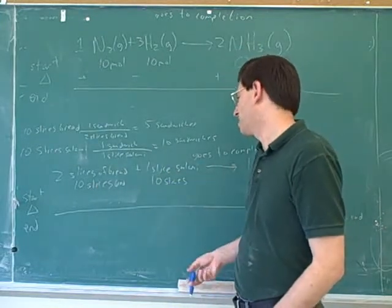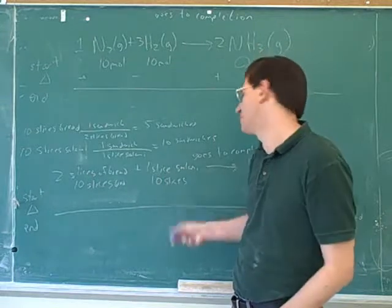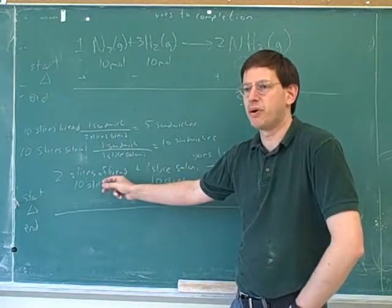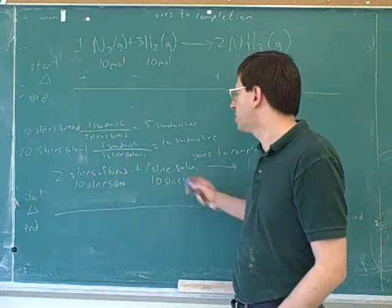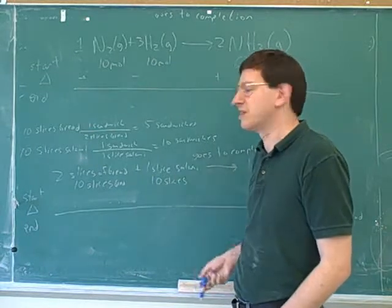I know every sandwich takes two slices of bread, so I have enough bread for five sandwiches, and every sandwich only takes one slice of salami, so I have enough salami for ten sandwiches, but this is irrelevant because I only have enough bread for the five sandwiches. So I wanted to use an ordinary example so we can see the common sense of this.